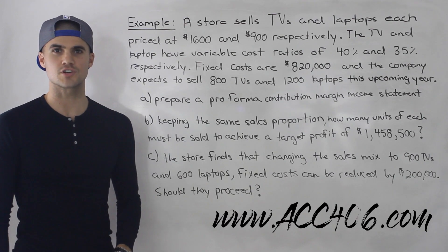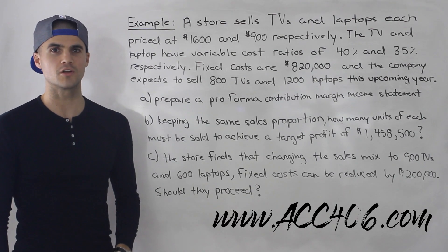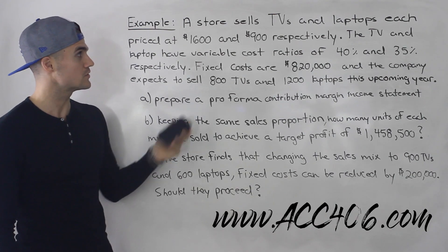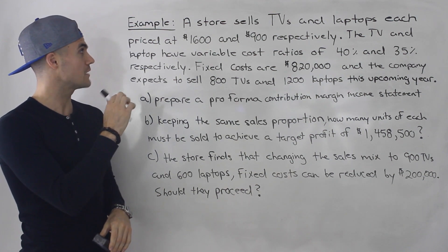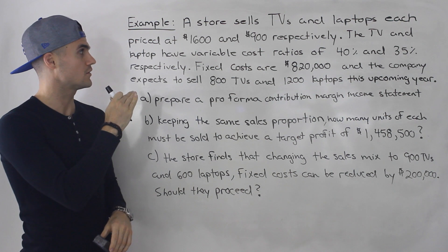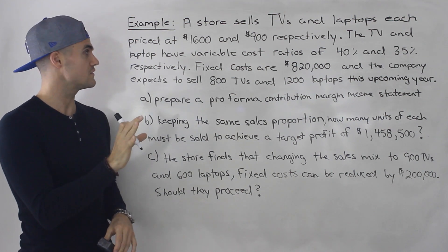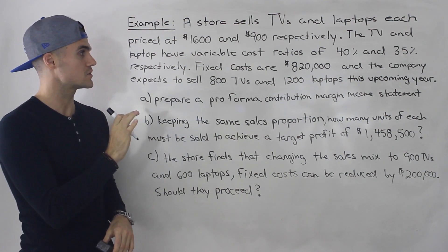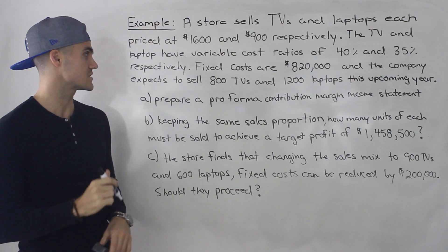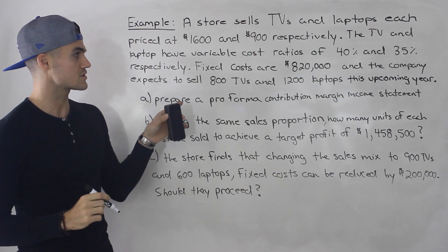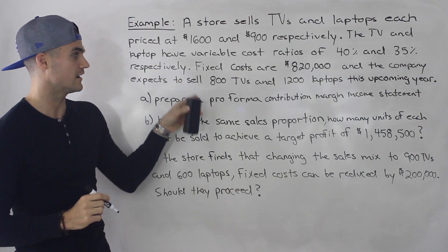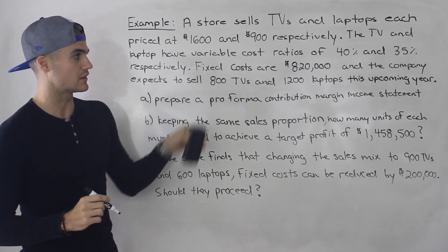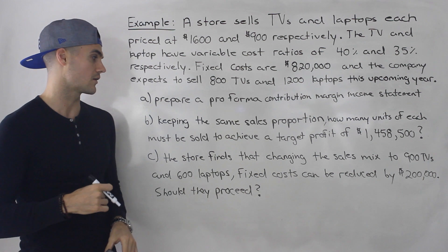Welcome back. Patrick here, moving on with multi-product analysis. We're going to do another example. A store sells TVs and laptops, each priced at $1,600 and $900 respectively. The TV and laptop have variable cost ratios of 40% and 35% respectively. Fixed costs are $820,000 and the company expects to sell 800 TVs and 1,200 laptops this upcoming year.